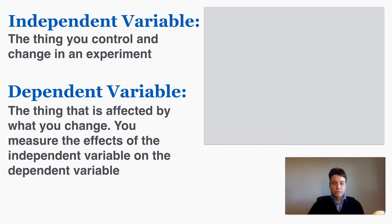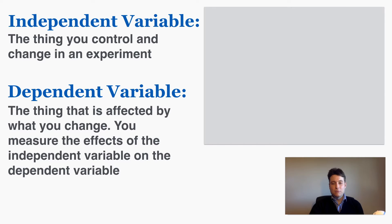Specifically it depends on what the independent factor is doing, and this is what you measure. This is what you're looking for the effects on. You're looking at how the independent variable affects the dependent variable in your experiment. If that's confusing I can show you a few examples of experiments and talk about what their independent and dependent variables are and hopefully that will make it a little clearer.